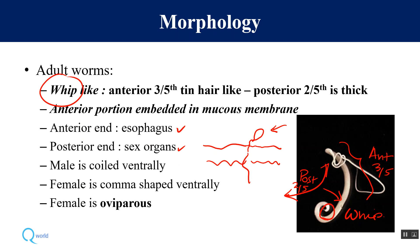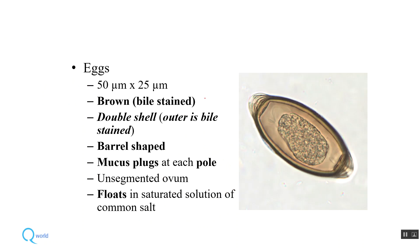The male worm is coiled ventrally, while the female has a comma shape ventrally. The female is oviparous, meaning it lays eggs from which the larval form develops into an adult. The egg is very characteristic: it is brown in color with a double shell — the outer one is more bile-stained. It is barrel-shaped with a mucus plug at each pole. It has an unsegmented ovum and floats in saturated salt solution.